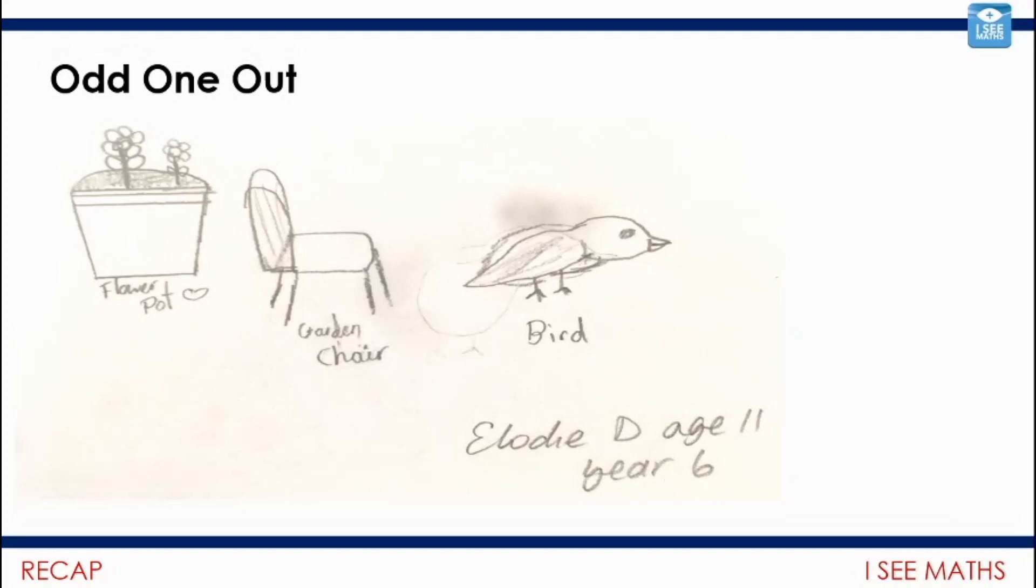The only place we could possibly start is with some of the brilliant odd one out examples that we've got. Here's one of my favorite ones. A flower pot, and I was just thinking here about the actual pot, a garden chair, and a bird. Which one's the odd one out? Elodie, I love this example. Pause the video, can you think of a reason for each one? I'll tell you what I went for. The flower pot must be the odd one out because it doesn't have legs. Then I went, no, the garden chair's the odd one out because the other two things are about natural beauty. I think birds are beautiful, flowers as well, but not the garden chair. Oh no, but hang on a minute. The bird's the odd one out because it's the only one that can move by itself. That's what I went for.